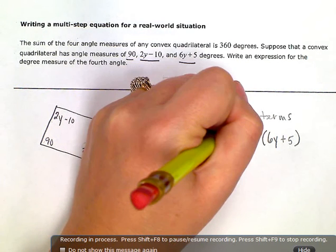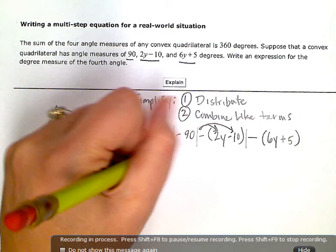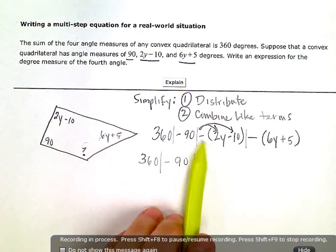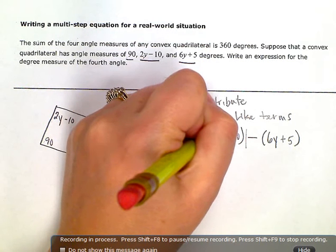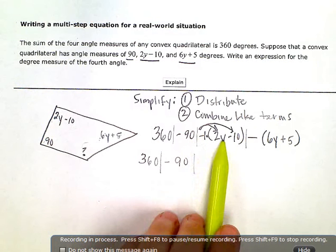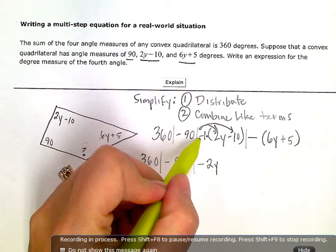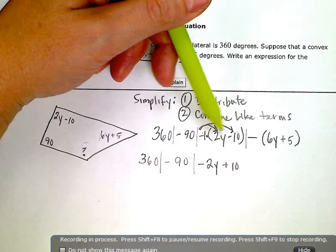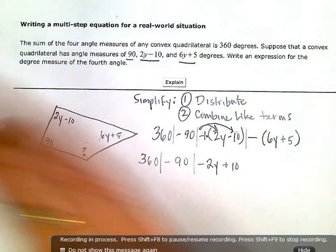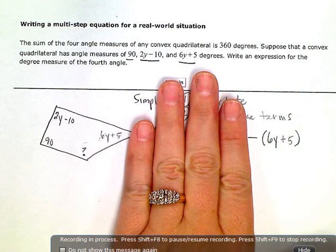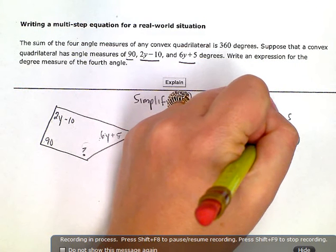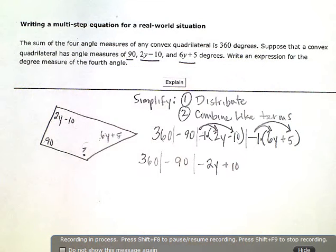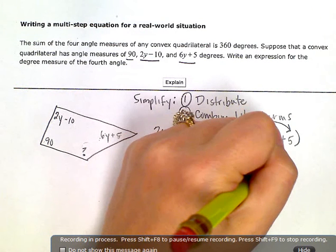Like two little individual mini problems within a bigger one. So I have 360 minus 90. Then right here, this is the same as negative 1 times what's inside. So negative 1 times 2y would give me a negative 2y. And negative 1 times negative 10 is a positive 10. So I've taken that negative 1 and spread it across both of those terms, or multiplied it across both of those terms. Now I'm going to do the same thing, but just with this last section, this last set of parentheses. Again, there's kind of a hidden 1 right there. It's negative 1 times everything inside. So negative 1 times 6y and negative 1 times 5. So that'll make this negative 6y and minus 5.